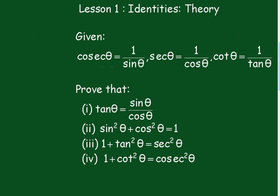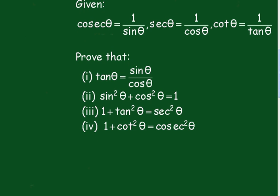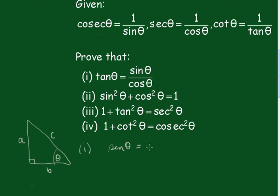First of all, we'll draw a little diagram — a right-angle triangle. We'll call the sides A, B, and C, with a right angle and angle theta. So the sine of theta is equal to A over C, the cos of theta is equal to B over C, and the tan of theta is equal to A over B.